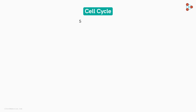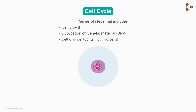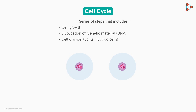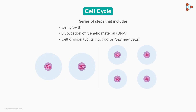The cell cycle is a series of well-orchestrated steps, including cell growth, duplication of genetic material, and cell division, usually resulting in two identical cells. In other words, a cell passes through various steps in order to grow, copy its DNA, and finally split into either two or four new cells. This is the cell cycle.